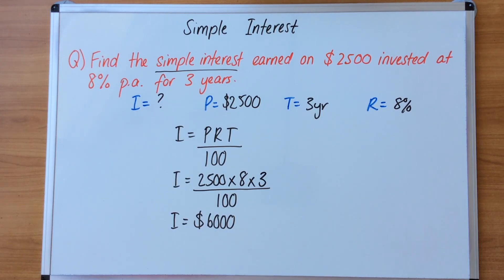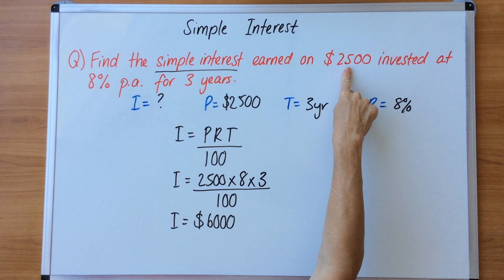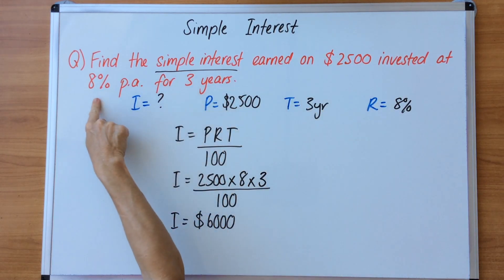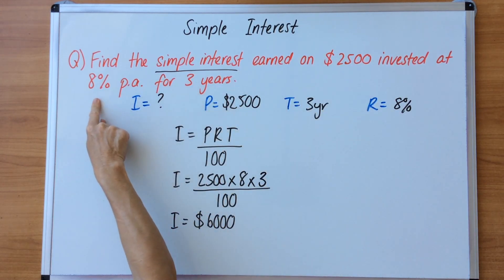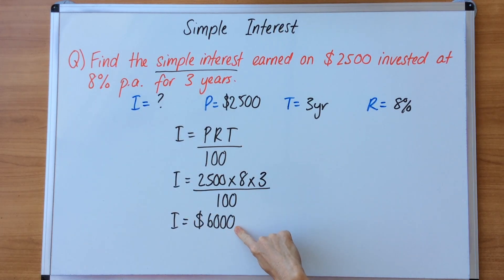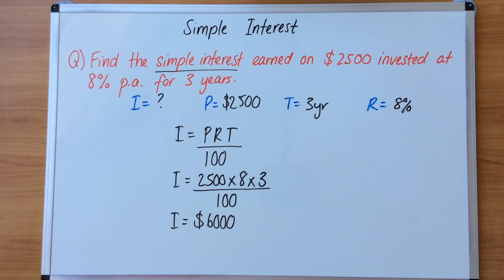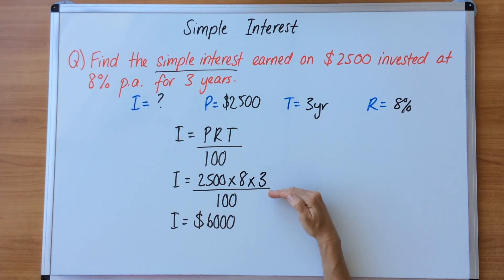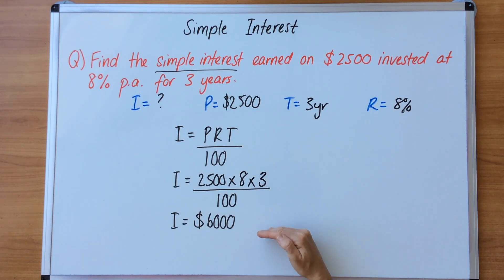So if you invested this amount of money for three years at this amazing percentage rate, you would actually make a significant amount on top. The process is: rule, substitution, then calculate to get your answer.